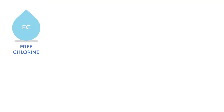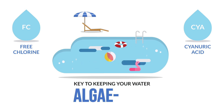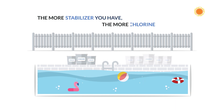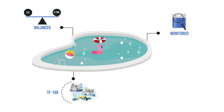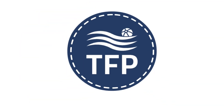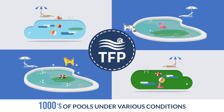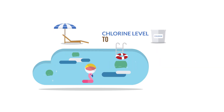At TFP, the relationship between free chlorine (FC) and cyanuric acid (CYA) is key to keeping your water algae-free. But watch out — the more stabilizer you have, the more chlorine you need. They must be balanced and monitored with your TF100 or Taylor K2006C test kit. TFP learned early on, after studying thousands of pools under various conditions, that as the stabilizer goes up, so too must the chlorine level to prevent algae.